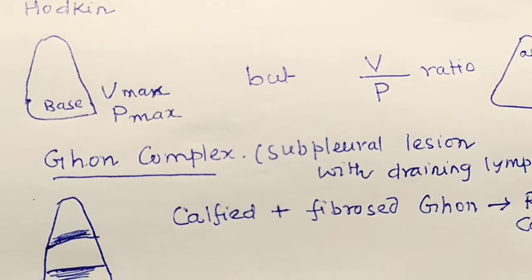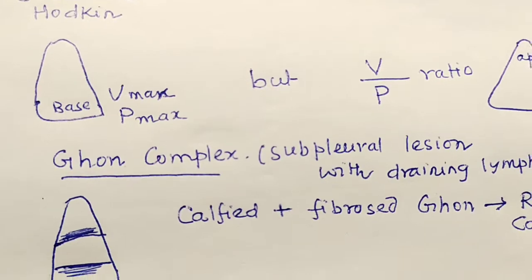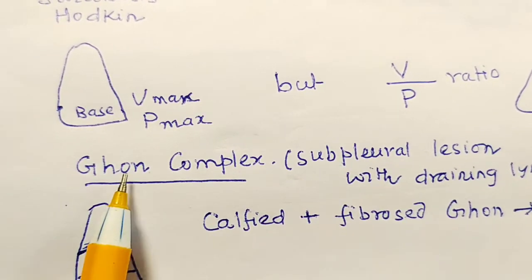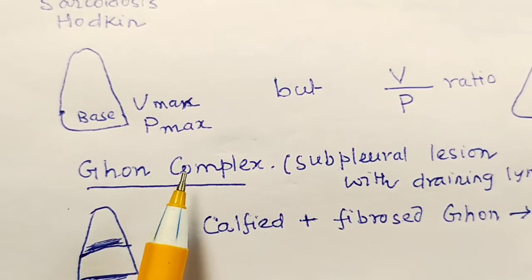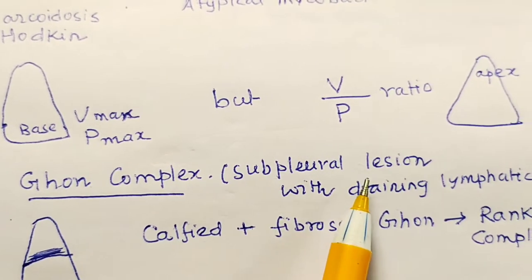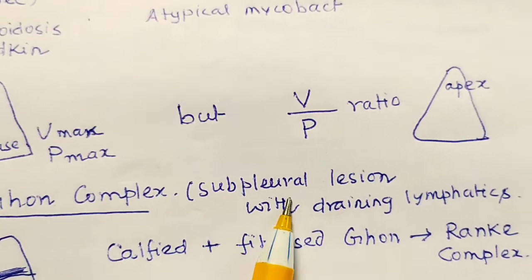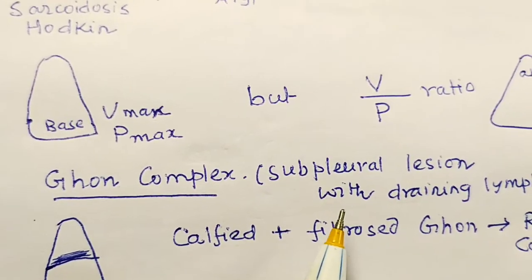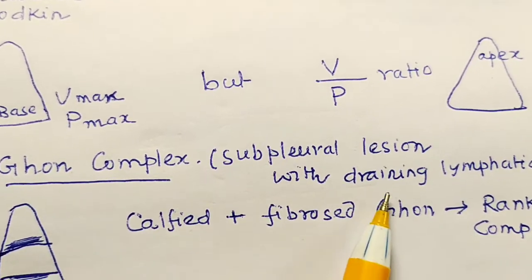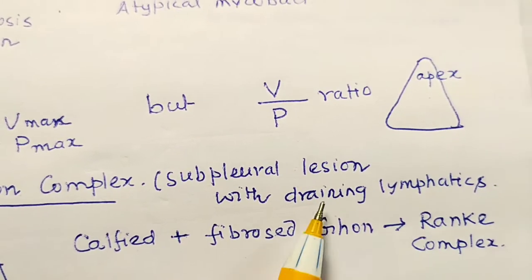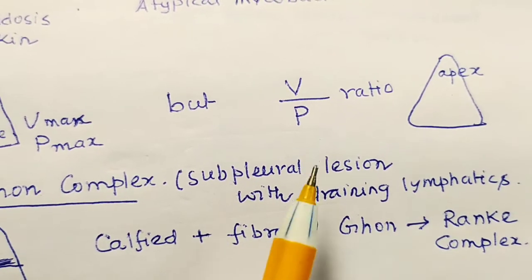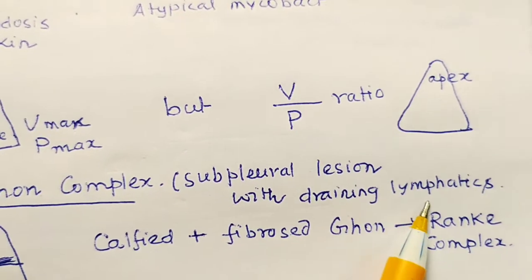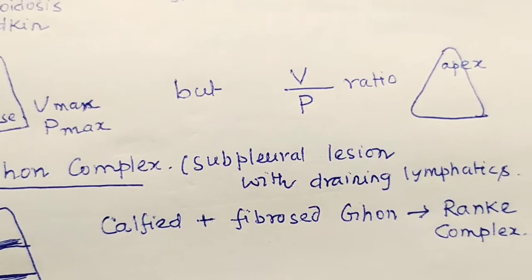Another important point is the Ghon complex. The Ghon complex is the characteristic complex for tuberculosis. It is a subpleural lesion — that is, it is located below the pleura — with draining lymphatics.